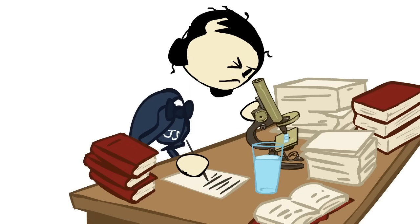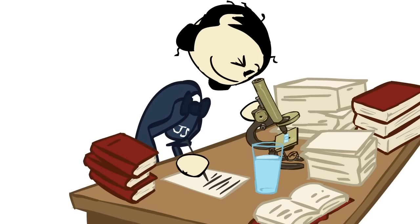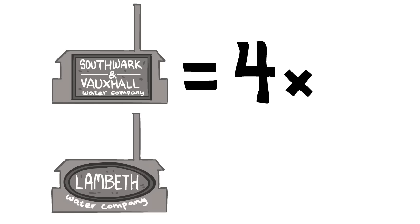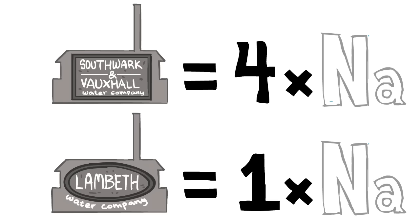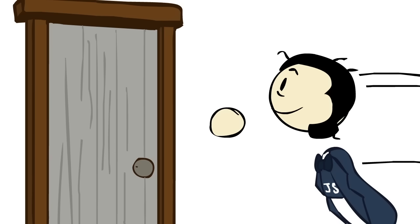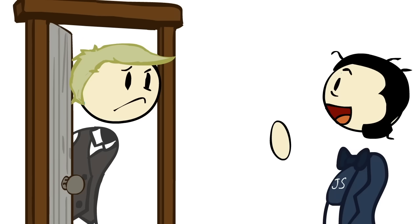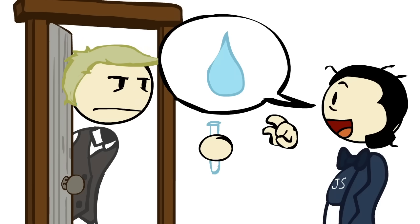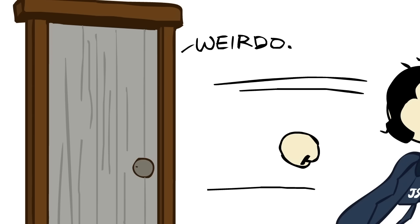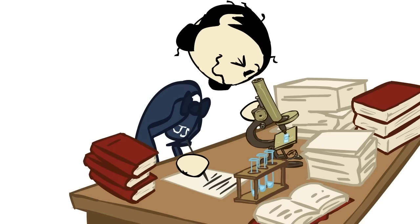He ran a chemical analysis on water samples from each of the companies, and found that S&V water contained four times as much salt as the water from Lambeth. He raced back to all the houses whose water source he couldn't yet ascertain, and, surely seeming mad, asked them for a thimble full of water, which he then put in a test tube and brought back to his lab. And with that, he had it.